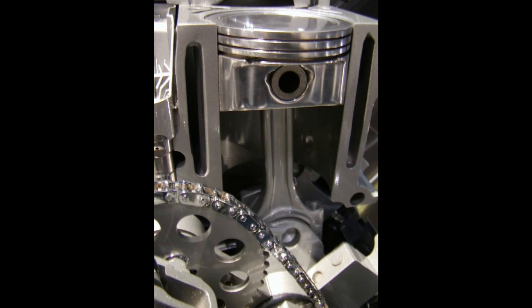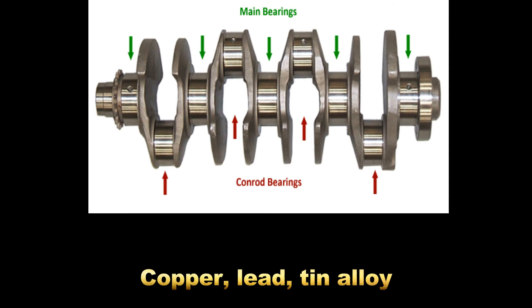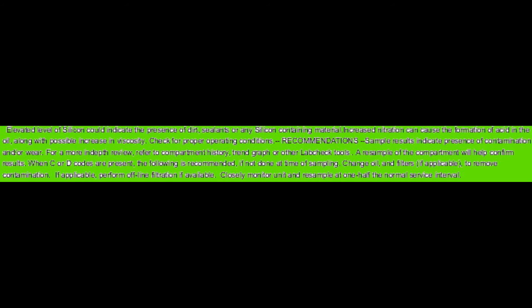This combination is commonly seen when dirt ingestion is observed. The main or connecting rod bearings are composed of an alloy of copper, lead, and tin, which when seen in combination with each other indicate a wear problem with the main bearings. Lead and copper are seen in much higher quantities than tin due to the alloy composition. This combination is commonly observed when a coolant leak is present. Often, just a single element is elevated, or a combination of unrelated elements may be elevated, indicating other potential issues which should be noted by the laboratory in the comments section of your report.